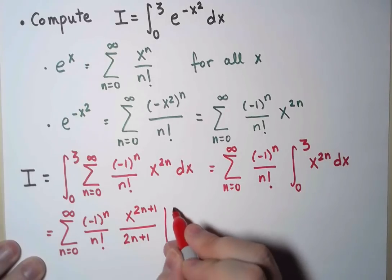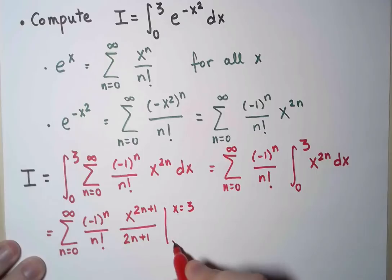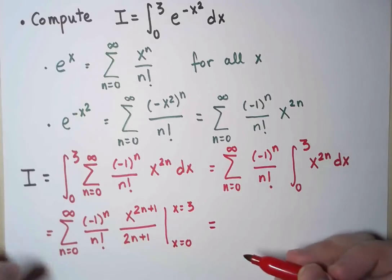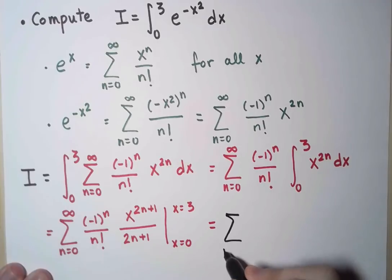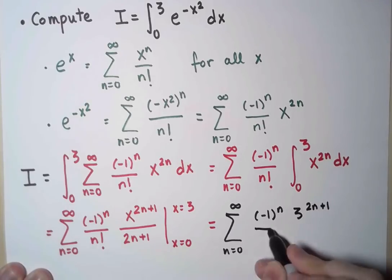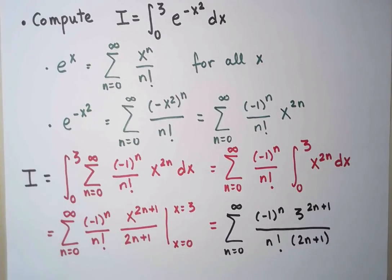And then I simply have to evaluate at 3 minus evaluate at 0. So I'll do that. That is my final answer.